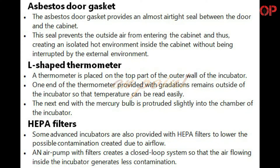Asbestos Door Gasket: The asbestos door gasket provides an almost airtight seal between the door and the cabinet. This seal prevents the outside air from entering the cabinet, thus creating an isolated hot environment inside the cabinet without being interrupted by the external environment. L-Shaped Thermometer: A thermometer is placed on the top part of the outer wall of the incubator. One end of the thermometer, provided with gradations, remains outside of the incubator so that temperature can be read easily. The other end with the mercury bulb is protruded slightly into the chamber of the incubator.